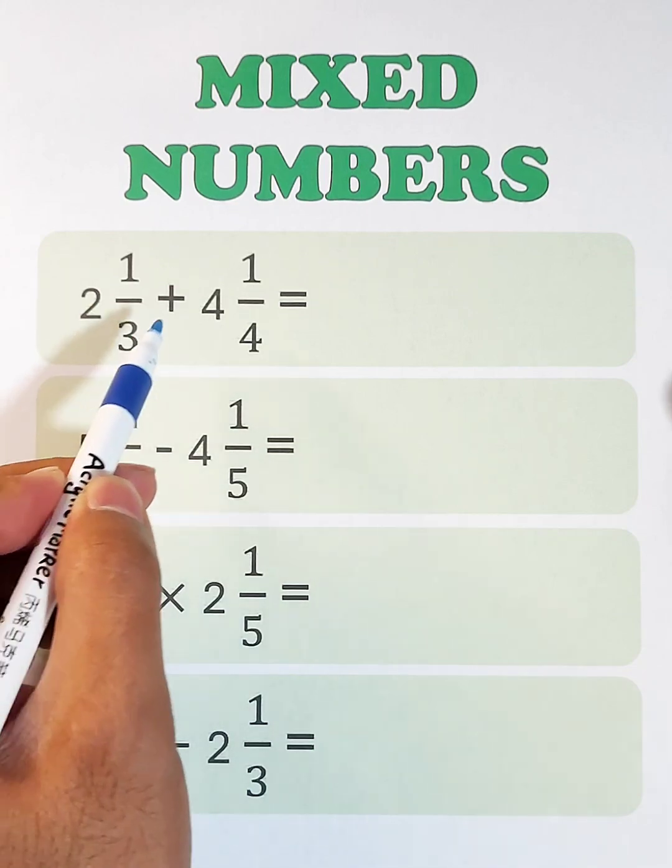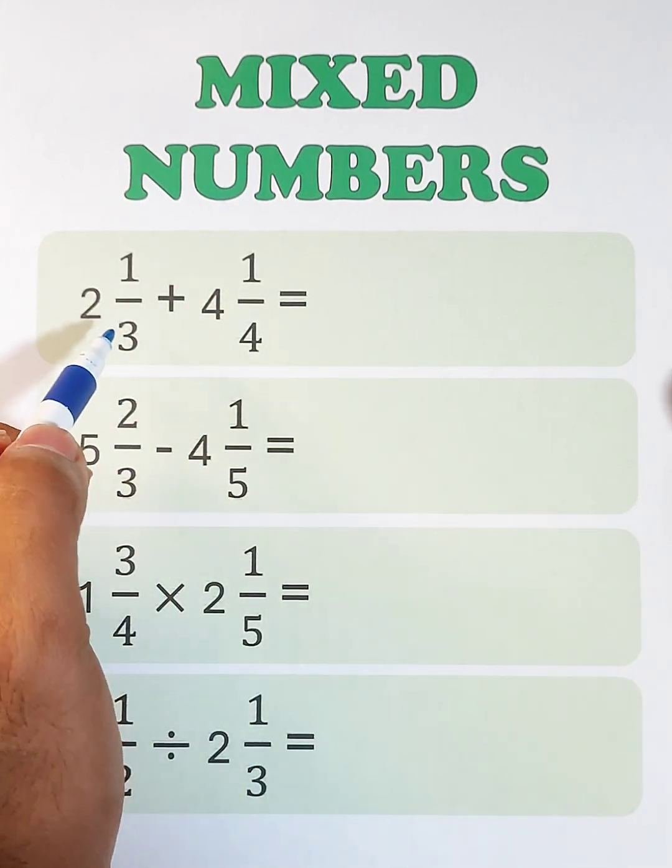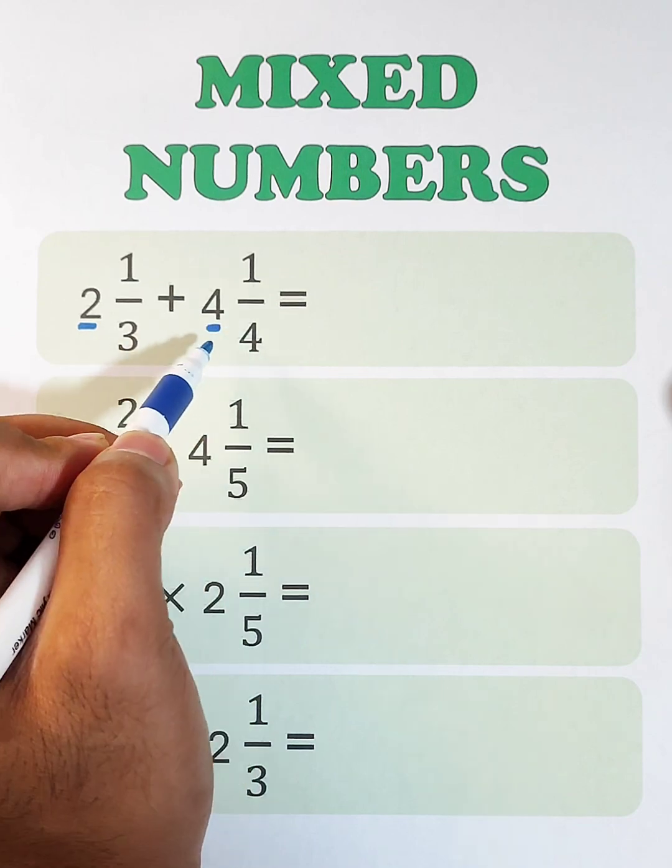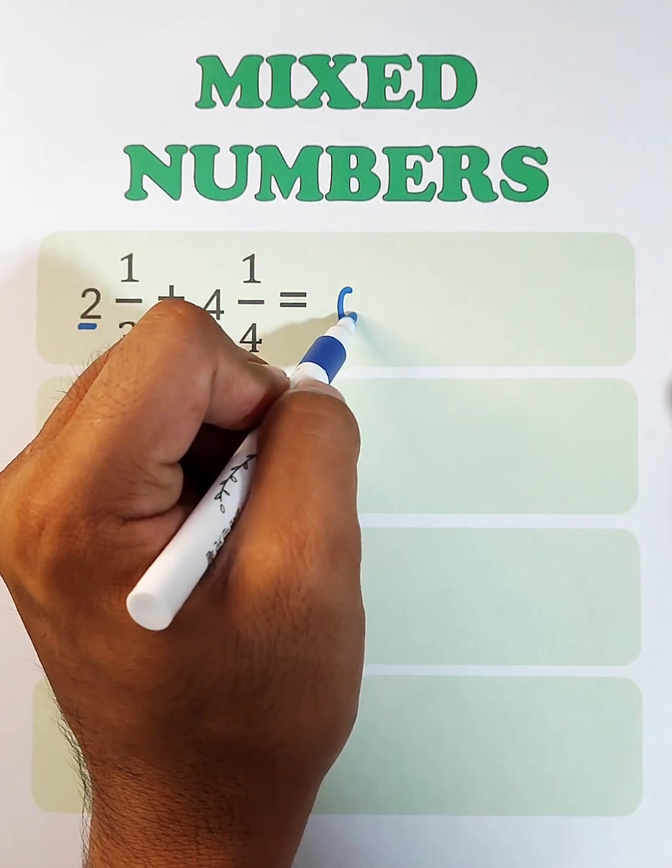2 and 1 third plus 4 and 1 fourth. First thing you need to do is add the whole numbers. 2 plus 4, that is 6.